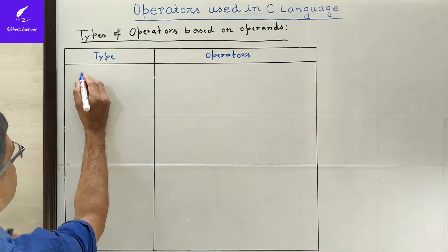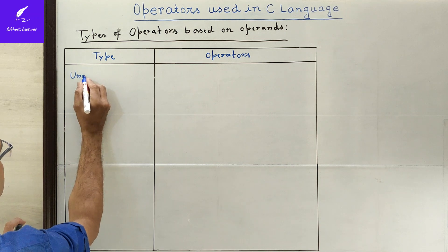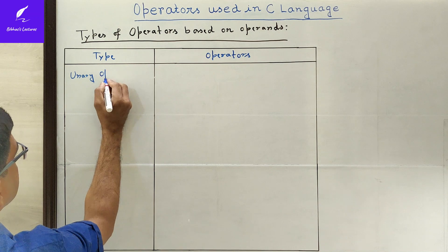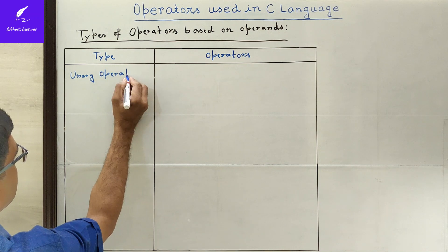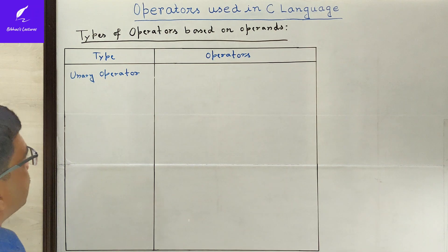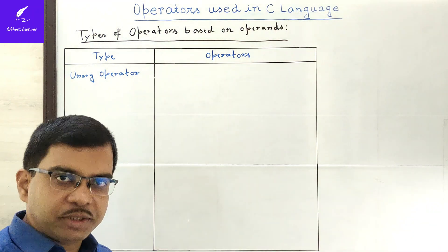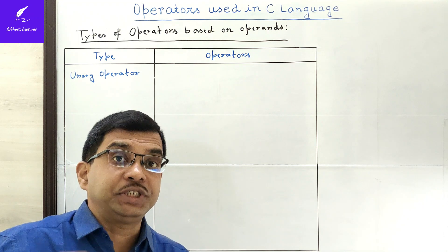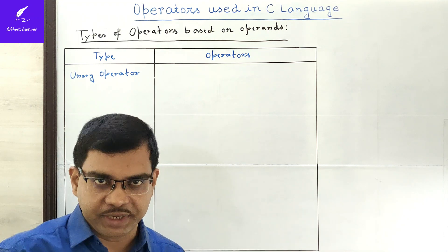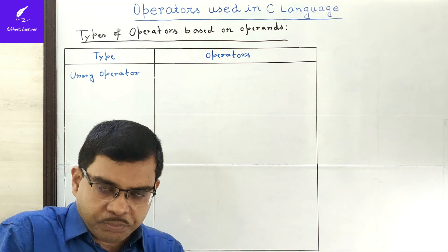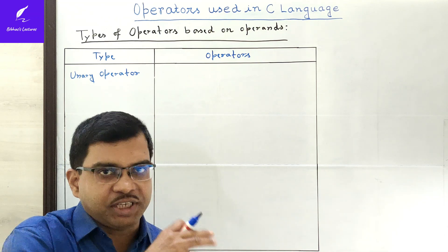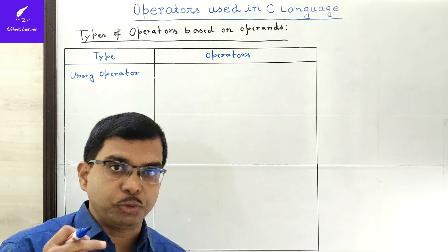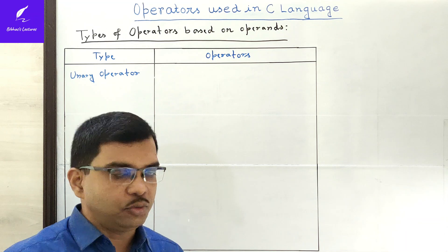First, we will discuss the unary operator. A unary operator is one that operates on a single operand. That means by performing on a single operand, this type of operator produces a result. So only one operand is required.